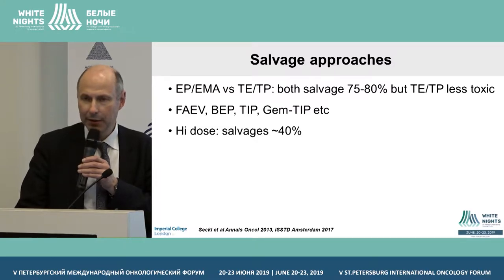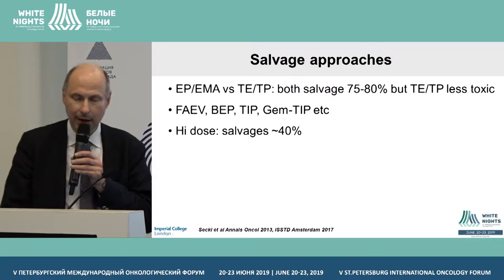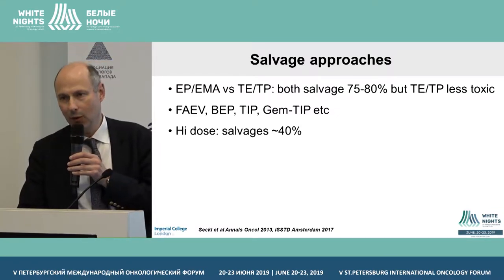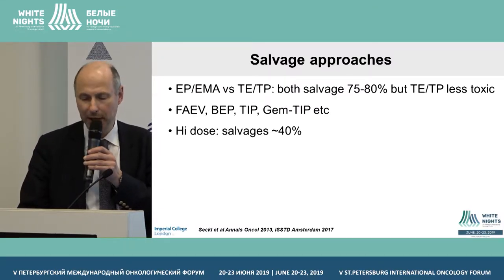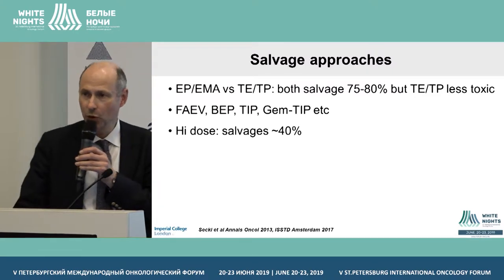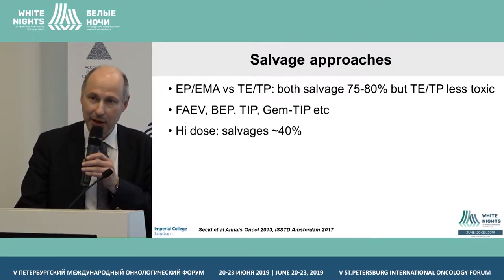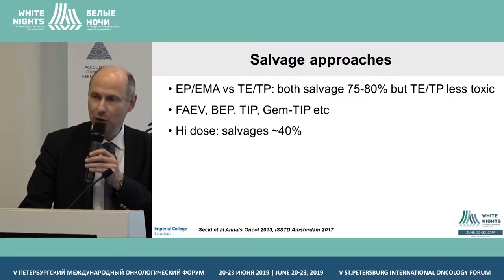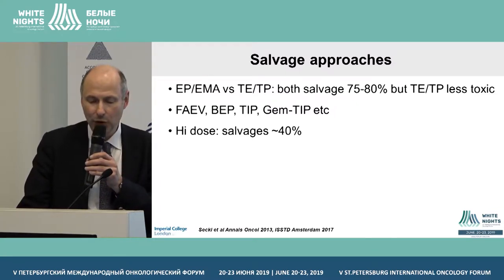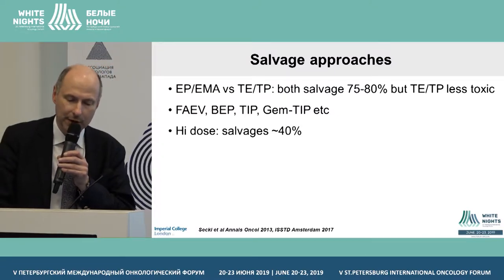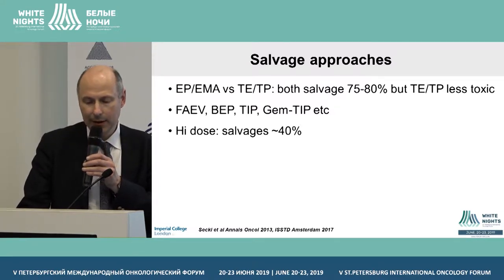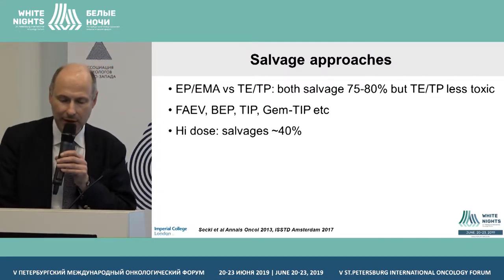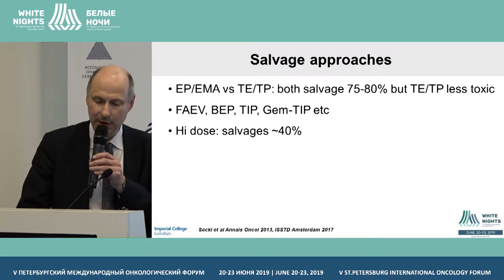What about high-dose chemotherapy? If standard treatment isn't quite achieving remission, you can give much bigger doses - which would normally kill the patient by destroying the bone marrow - but you store some bone marrow in the freezer before giving the high-dose chemotherapy, then re-infuse it afterwards. This salvages about 40% of patients, either directly in about 20-22% or indirectly with other treatment in the remainder.